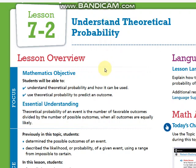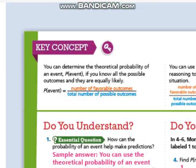This week, we are going to focus on two items: theoretical and experimental probability. First of all, let's understand what is theoretical and how it can be used. How can we predict the outcomes? The main idea here is that we can write it as a rule: P of event equals the number of favorable outcomes over the total number of possible outcomes.